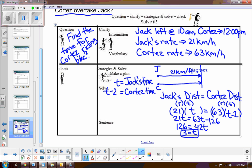So we solved the problem. So we made a plan, and we solved it. Now let's write the sentence. So T represents Jack's time. So Jack's time on his bicycle is three hours.